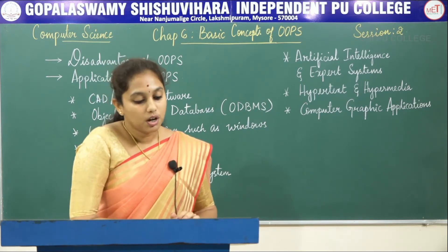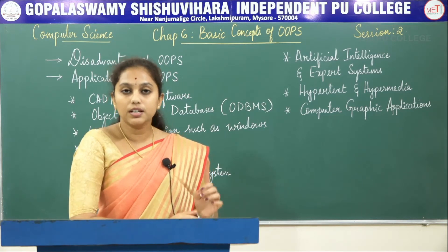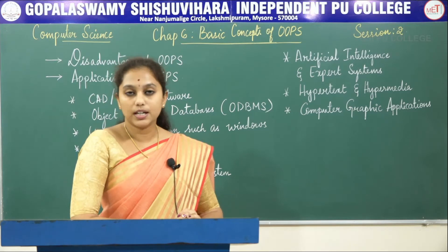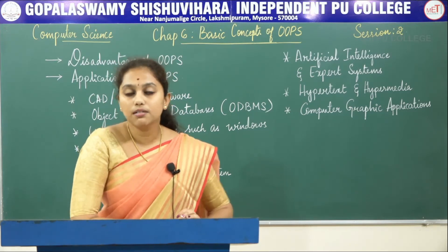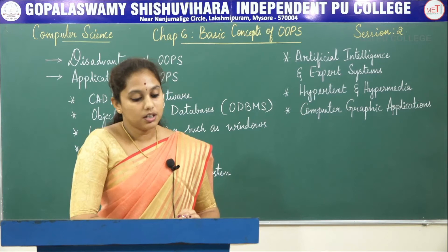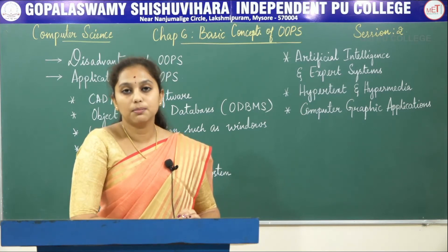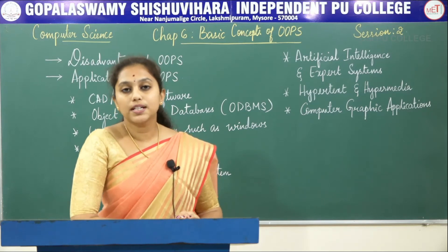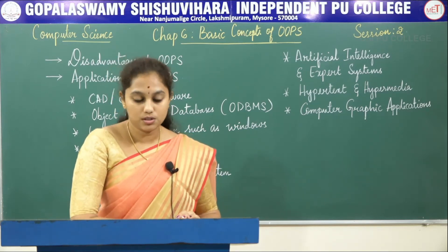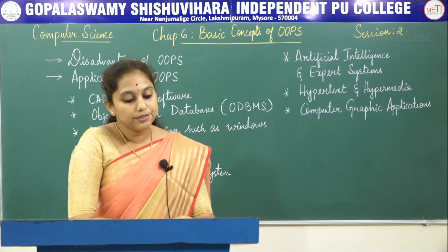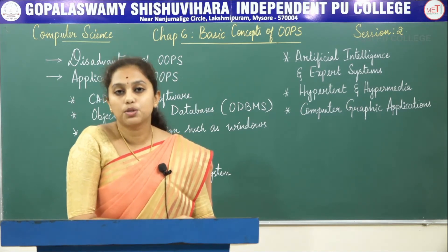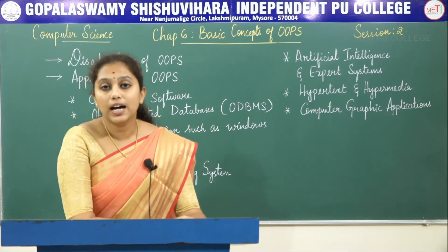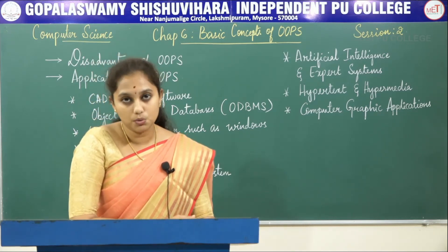The second question is: what is an object? An object is a real-world entity and it is a collection of data members and member functions. The third question is: a class is a collection of objects having the same features. The fourth question is: define the term data abstraction — data abstraction is hiding the background details from the user.